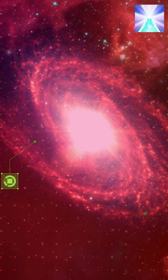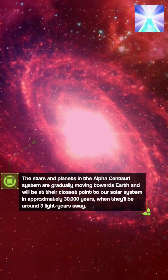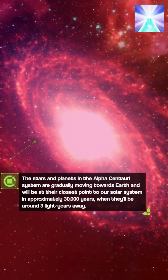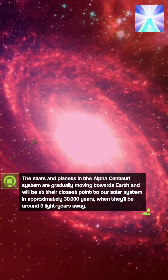The stars and planets in the Alpha Centauri system are gradually moving towards Earth and will be at their closest point to our solar system in approximately 30,000 years, when they'll be around three light years away.